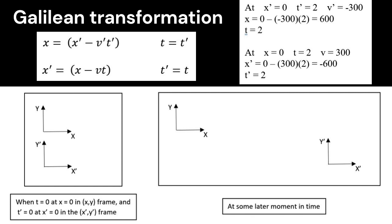So, x, the coordinate of the airplane relative to the tower, plug into the equation x prime 0 minus v prime, which is minus 300, times t prime, which is 2, is 600. So the tower sees the airplane as 600 feet ahead.